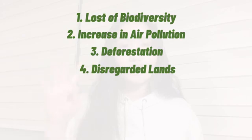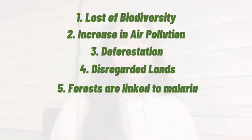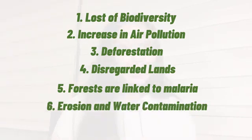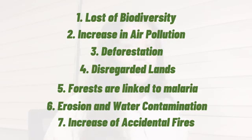Number four: disregarded lands. As mentioned, farmers will disregard lands once they are done using them. Number five, forests are linked to malaria. In the forest, there are many viruses, and trees and plants are what protect us from them. You might even see a new variant or new virus in the next ten years. Number six: erosion and water contamination. Landslides and flooding will lead to water contamination. And lastly, there is an increase in accidental fires.